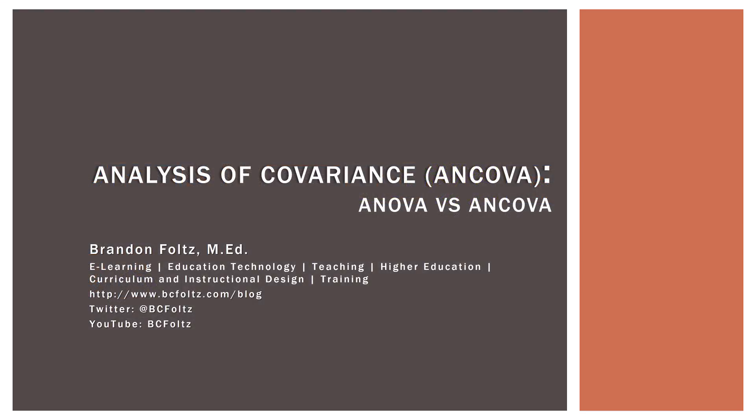This has been video number two in our series on analysis of covariates, or ANCOVA, where we took an ANOVA, looked at the results, then inserted the covariate, did an ANCOVA, and looked at how the output changed for both — interpreted what happened, where our sum of squares went, why it happened that way, and how our means were adjusted on the back end. I hope you enjoyed it, I hope you learned a lot, and I look forward to seeing you in our next video.